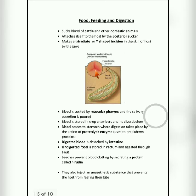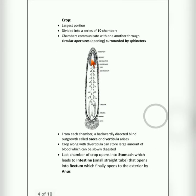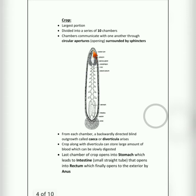The muscular pharynx then sucks the blood from the host. Since the pharynx is surrounded by salivary glands, while it is sucking, the salivary glands secrete saliva. This saliva containing hirudin is poured into the wound. The saliva also consists of an anesthetic substance, so when a leech is biting, we do not feel the sensation.